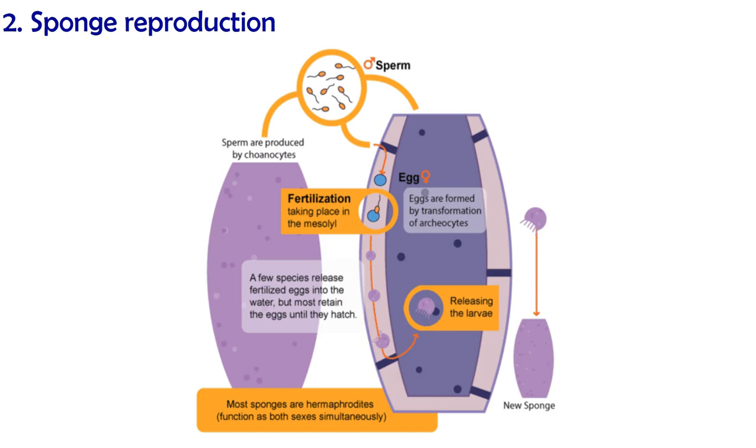Now another challenge if you are sessile or stuck to one spot is reproduction because you can't go and find yourself a mate. So, what happens? Sponges have two options for reproduction. One is to reproduce asexually.